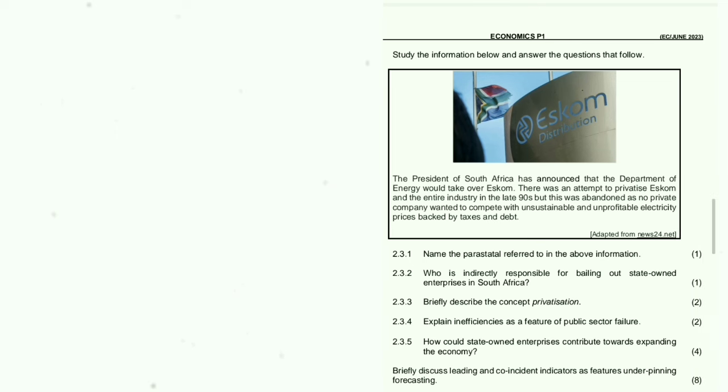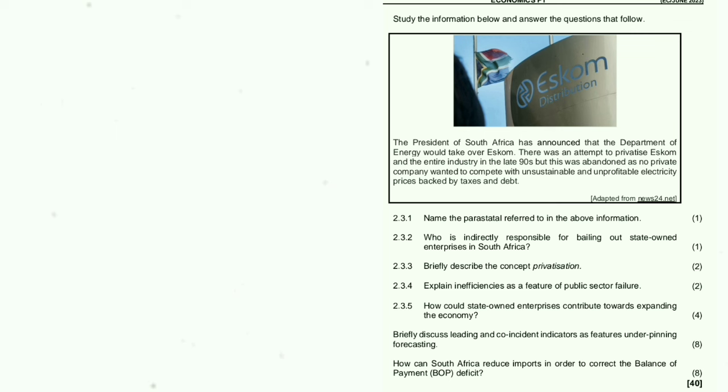Study the information below and answer the questions that follow. 2.3.1: Name the parastatals referred to in the above information — this is Eskom. 2.3.2: Who is indirectly responsible for bailing out state-owned enterprises in South Africa? The taxpayer.